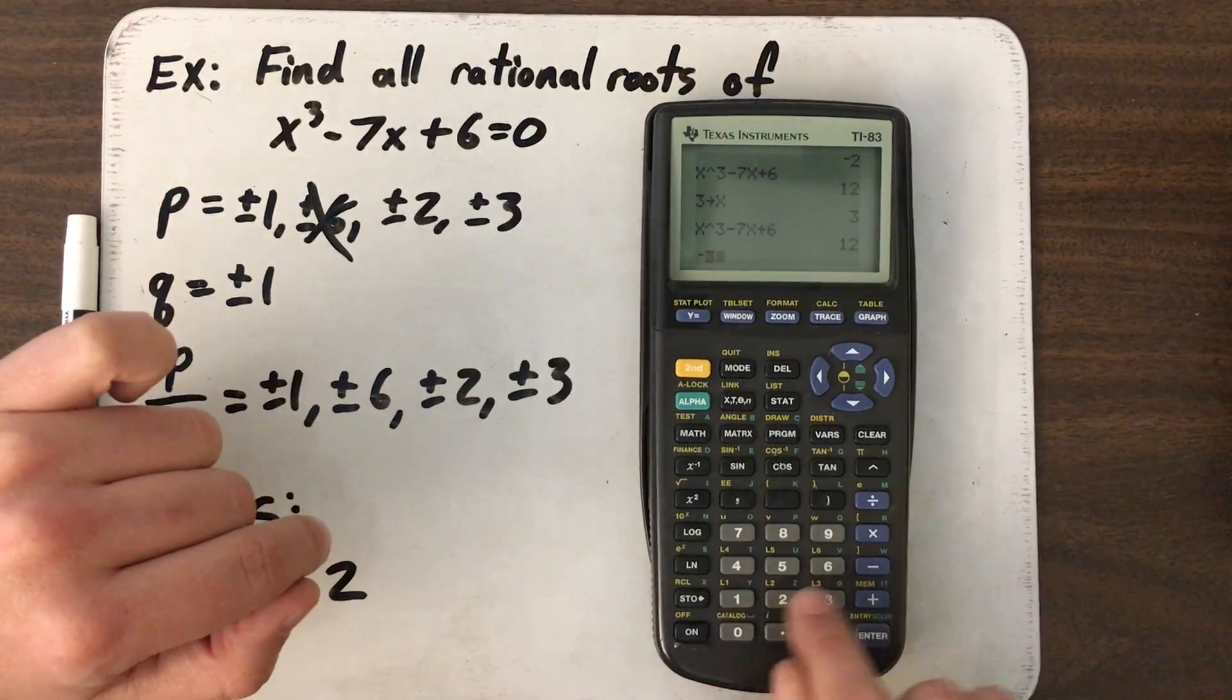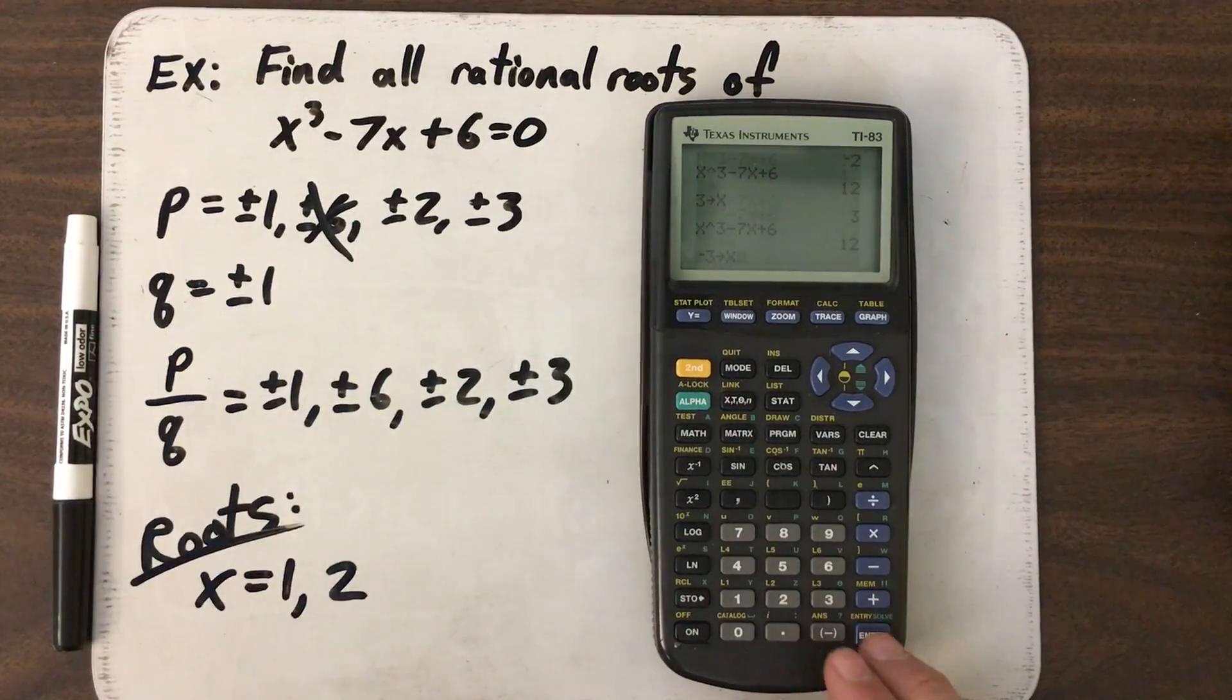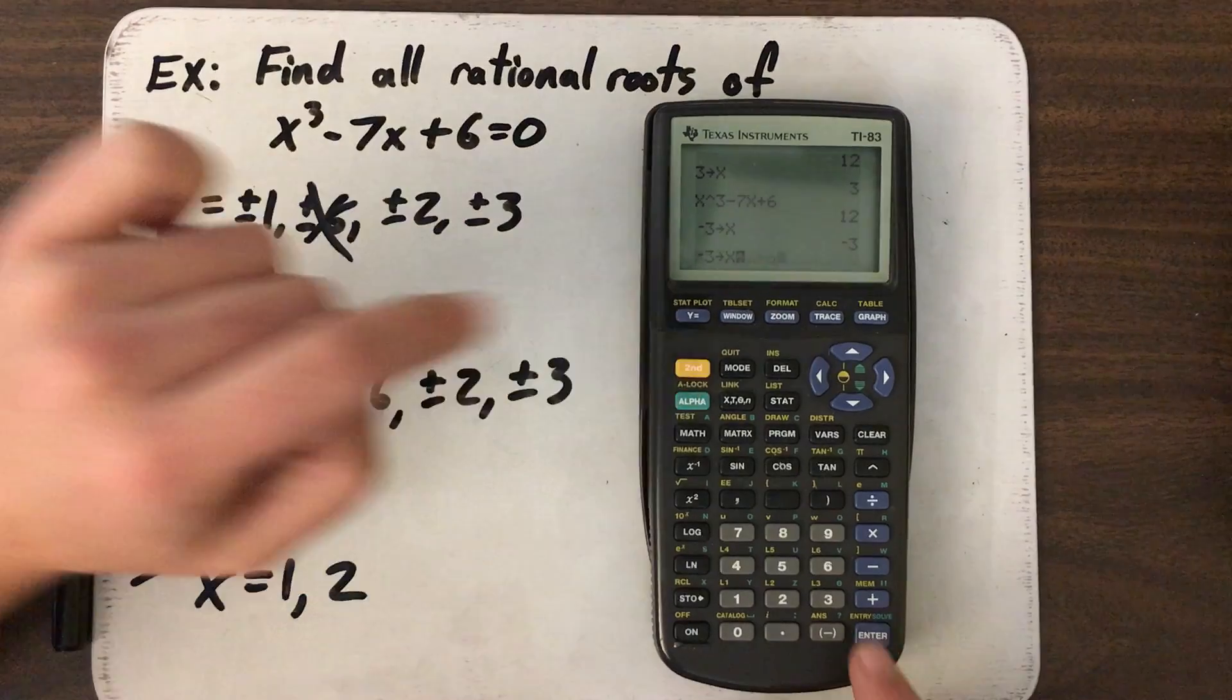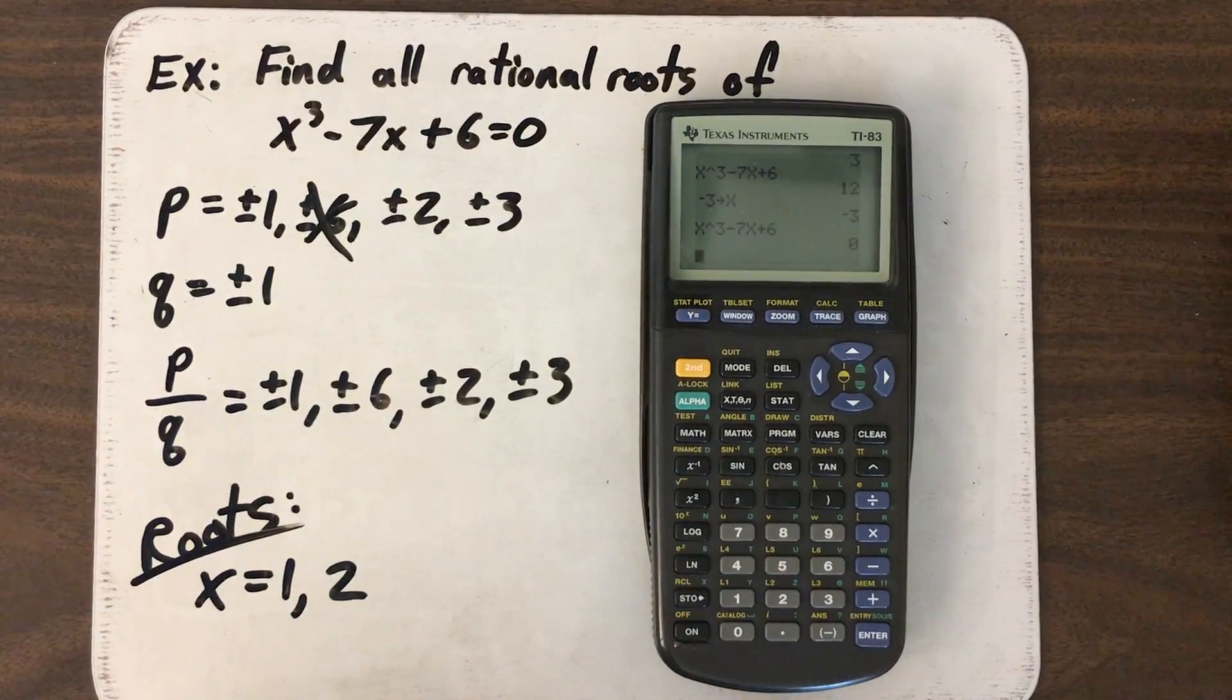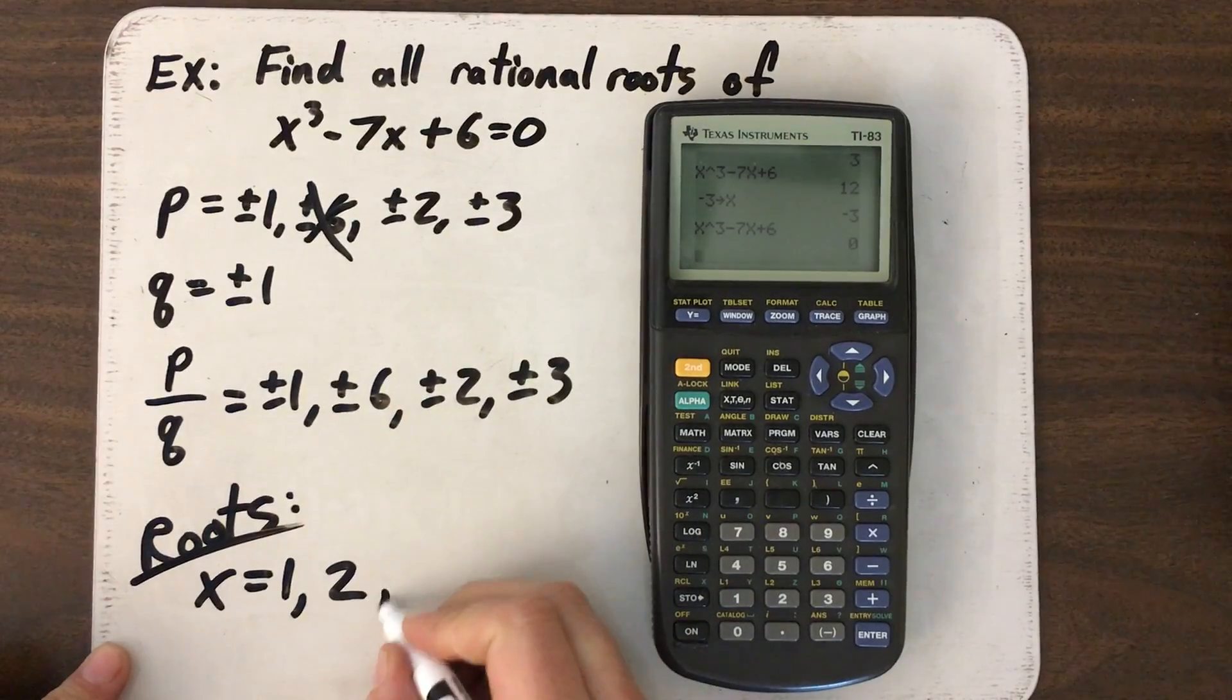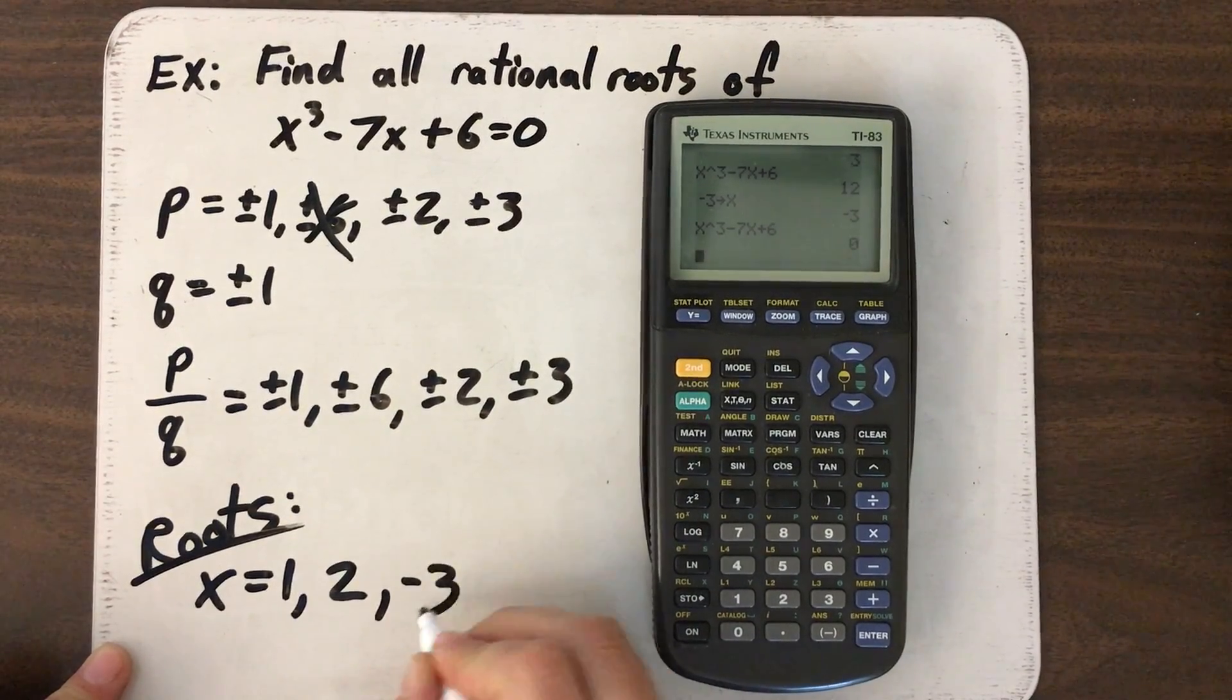Last one. Negative 3. Store it for X. Second, enter. Second, enter. And there it is. I get 0. So my real roots, or excuse me, my rational roots are 1, 2, and negative 3.